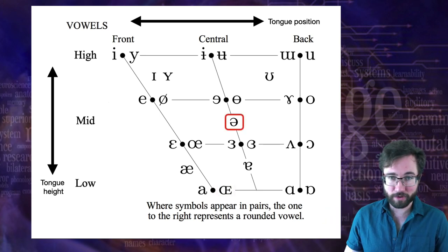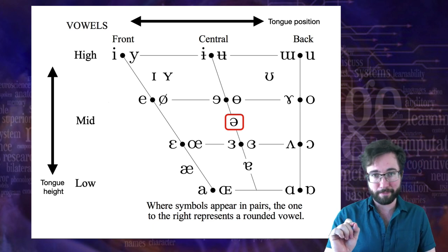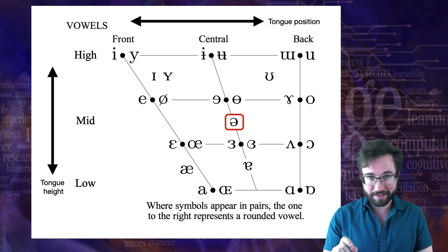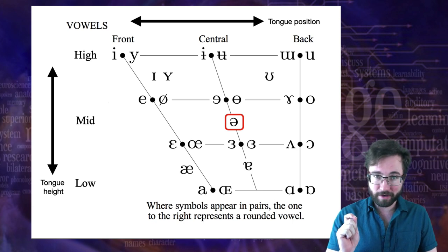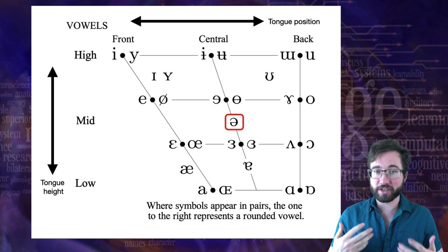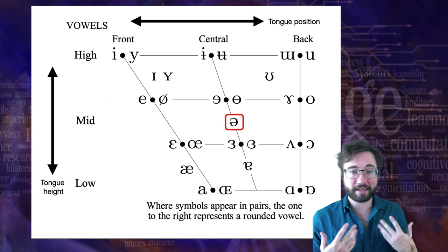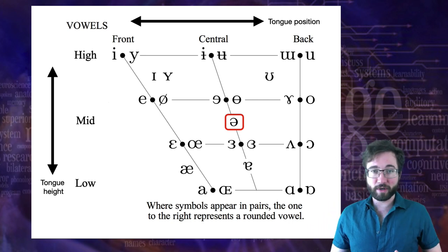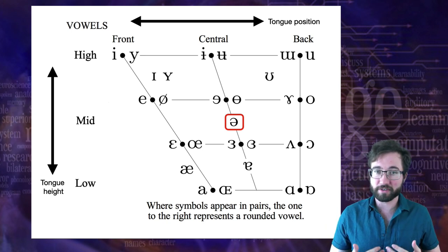This symbol in the middle — you should remember this one. It has a special name. It's called schwa. This is your unrounded mid central vowel. This is where your tongue is in the very middle of the vowel space, not constricted at all. This is the vowel which takes the least energy to produce — the most lazy sound possible. Just 'uh'.